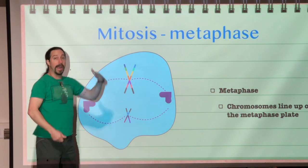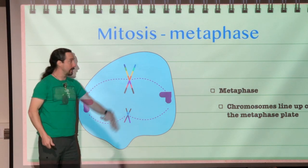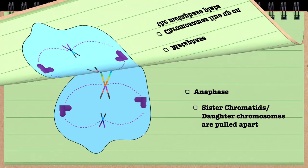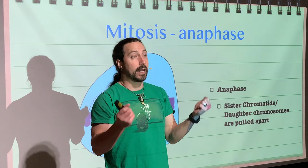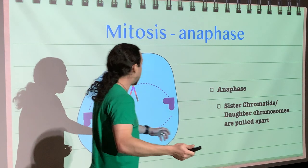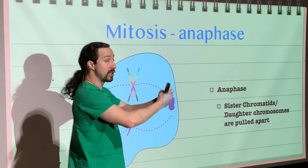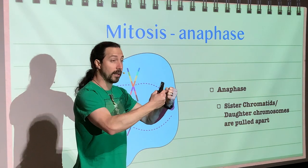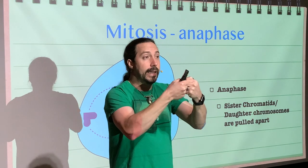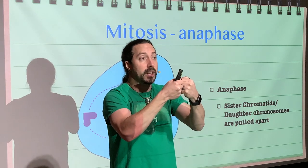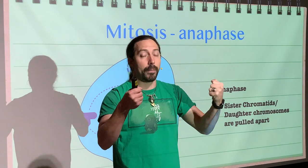Taking us to anaphase. In anaphase, the sister chromatids are going to be pulled apart from each other by the mitotic spindle. The mitotic spindle is going to shorten, and as it shortens, each sister chromatid is pulled apart.